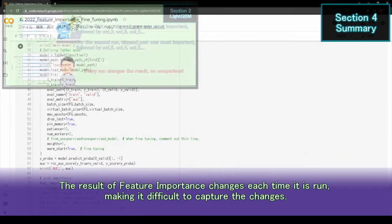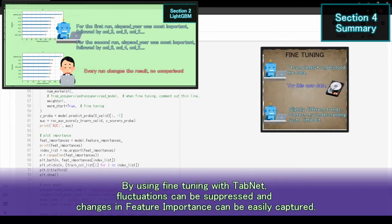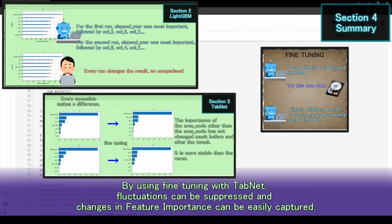The result of feature importance changes each time it is run, making it difficult to capture the changes. By using fine-tuning with TabNet, fluctuations can be suppressed and changes in feature importance can be easily captured.